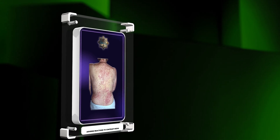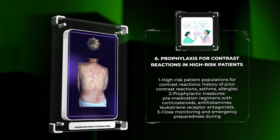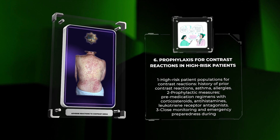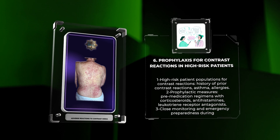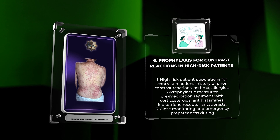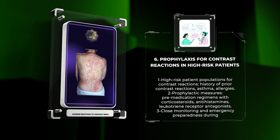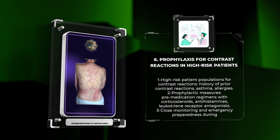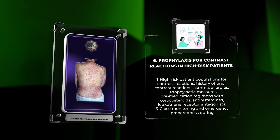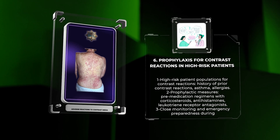Certain patient populations, such as those with a history of prior contrast reactions, asthma, or allergies, are considered high risk for adverse reactions to contrast media. Prophylactic measures can be employed to mitigate the risk of these reactions. Pre-medication regimens involving corticosteroids, antihistamines, and/or leukotriene receptor antagonists have been shown to reduce the incidence and severity of contrast reactions in high-risk patients. Close monitoring and emergency preparedness should be in place during contrast-enhanced procedures.